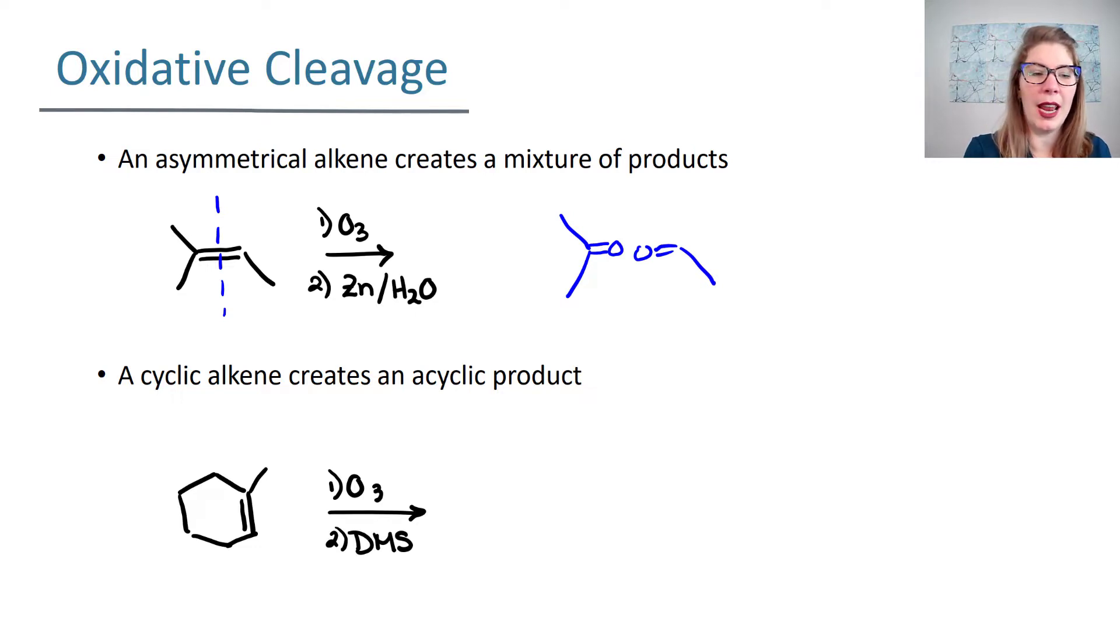Because we started with an asymmetrical alkene where this side was not the same as this side, we get two different products at the end. Depending upon the substitution of each of these carbons determines if you're ending up with a ketone or an aldehyde. Notice that if you have two carbon groups on either side of your alkene, you get a ketone at the end. If you only have one carbon group here, you get an aldehyde.